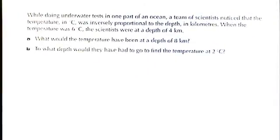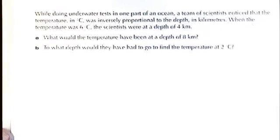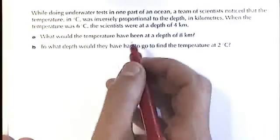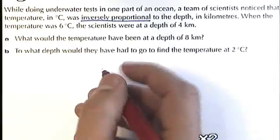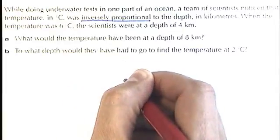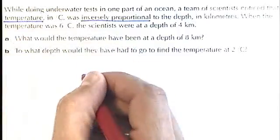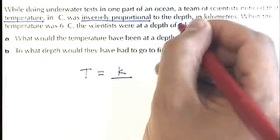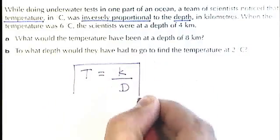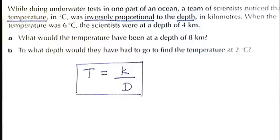Here's the first question. It says, while doing underwater tests in one part of an ocean, a team of scientists noticed the temperature was inversely proportional to the depth in meters. When the temperature was 6 degrees, the scientists were at a depth of 4 kilometers. So first thing to notice, the words inverse proportional, inversely proportional. What this means is that we can start from that formula that I just said. A equals K over B. But I'm not going to use A. I'm going to use T for temperature and D for depth. So it's important that you identify your two variables, the two things that are going to change in this formula. T, the temperature, and the depth, D.